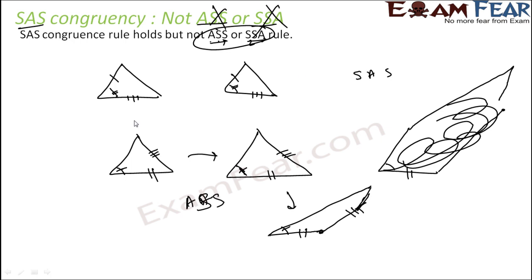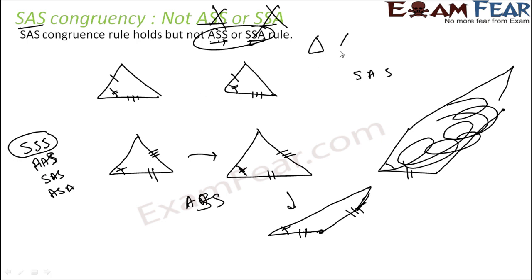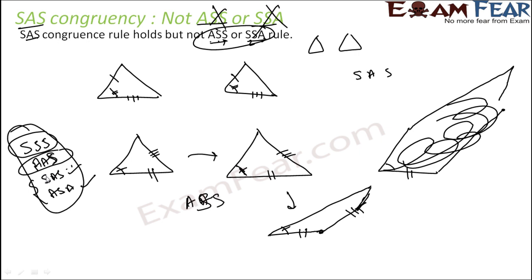To summarize the congruence rules: we have SSS, AAS, and SAS. AAS works because if two angles are equal, the third angle is also equal, so if two angles and one side are equal the triangles will be congruent. These are the four main rules for congruency. In both ASA and SAS you see the pattern of side-angle-side repeated.